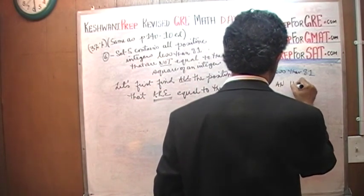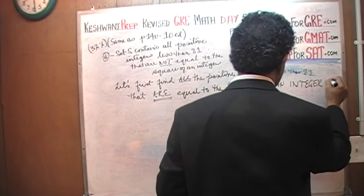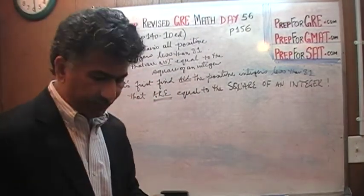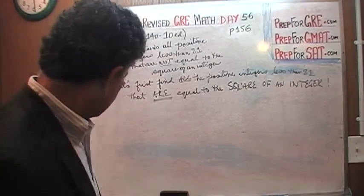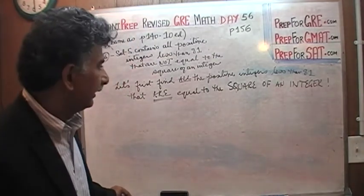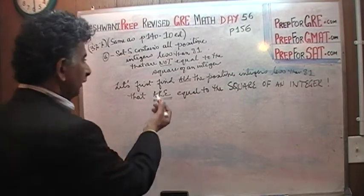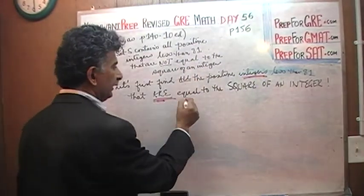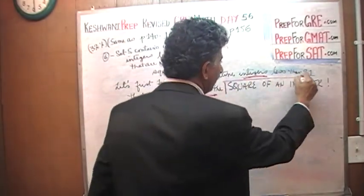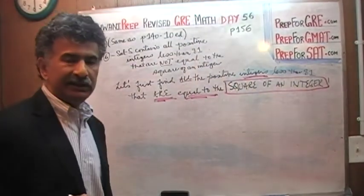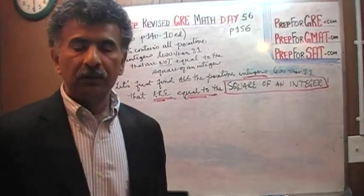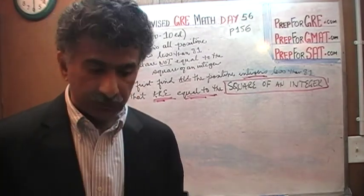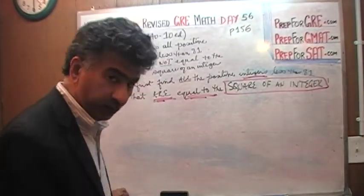Square of an integer. The very first thing we have to figure out is the language here — it is a very awkward, very cumbersome way of saying "square of an integer." Let's first find all the integers that are equal to the square of an integer. What does it mean for an integer to be a square of an integer?